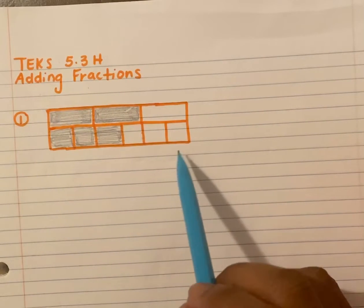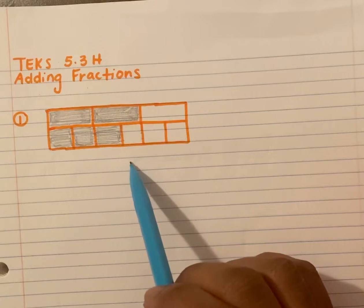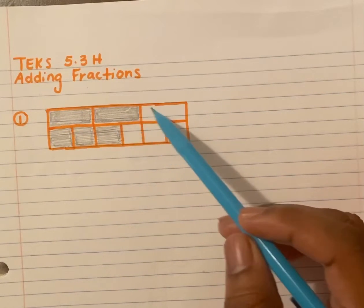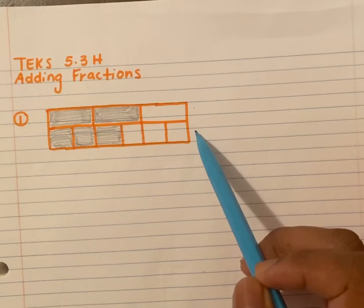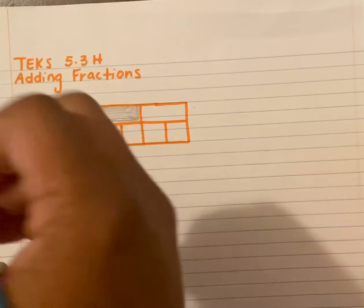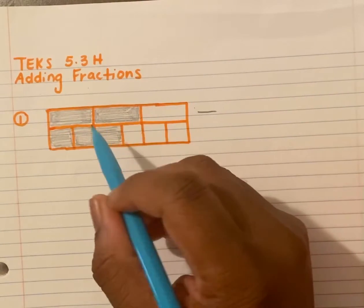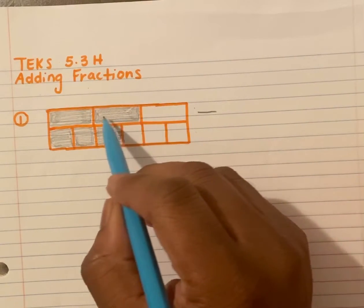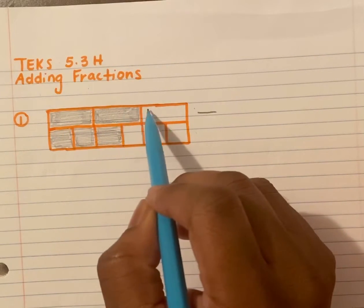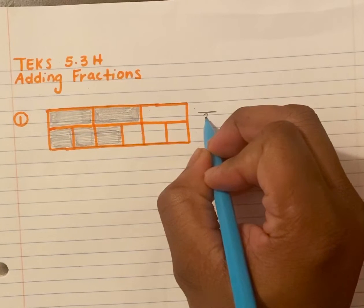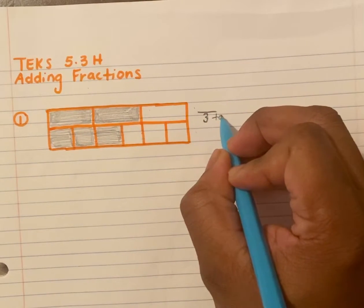Let's look at this picture, because sometimes you will get only a picture. We're combining these two sets of fractions — this is a fraction and this one's a fraction. Let's first label each one to figure out how many total pieces we have. Up here on the top: one, two, three — so three will be my denominator, because that's my total pieces.